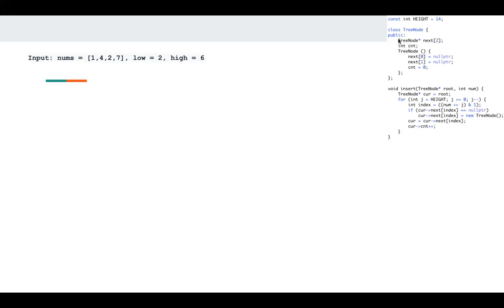This is the definition of my Trie node. I just have two nodes here, and I have a count initialized to zero. The insert function is the typical function to insert a node into the Trie.